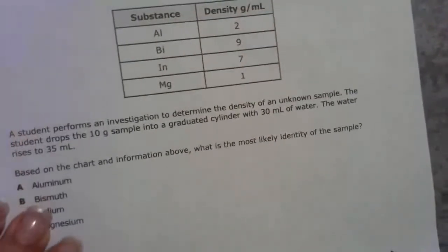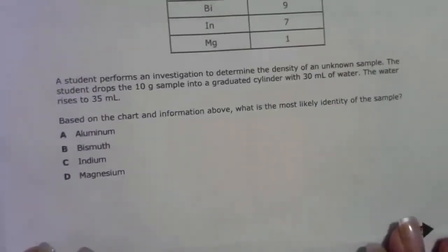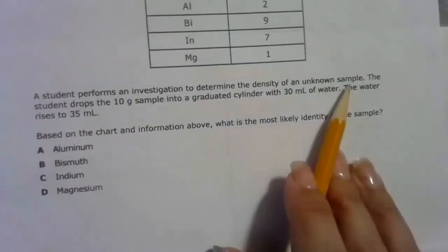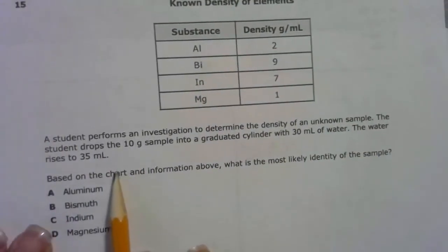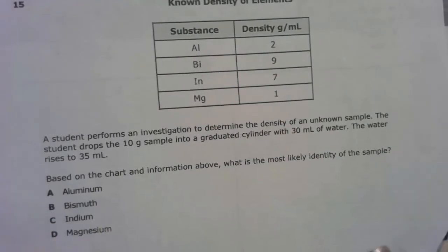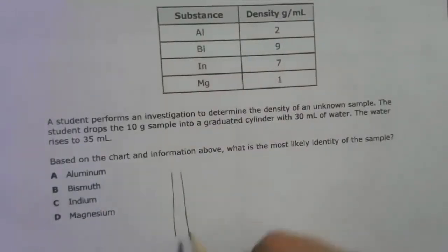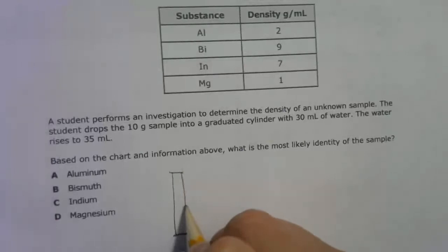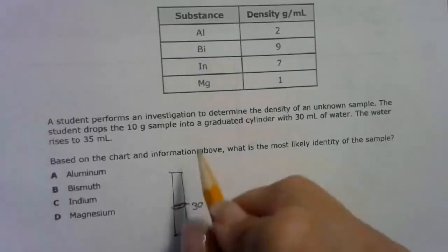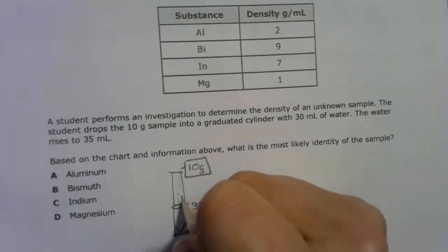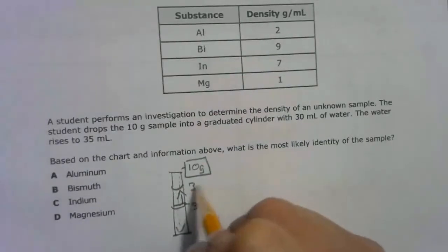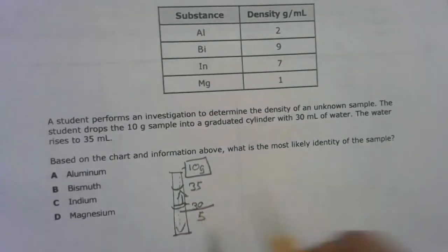Now let's do 15. A student performs an investigation to determine the density of an unknown sample. The student drops the 10 gram sample into a graduated cylinder with 30 milliliters of water. The water rises to 35 milliliters. Based on the chart and information above, what is the most likely identity? Here's my graduated cylinder. This is where my water is. I drop my 10 gram in there, and when I do that my water goes up to 35.